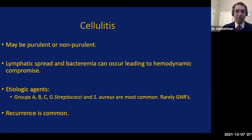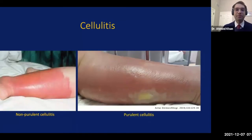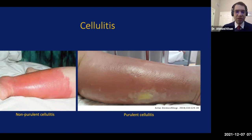Etiologic agents most commonly involve streptococci groups A, B, C, and G, and Staphylococcus aureus, though gram-negative rods are sometimes observed as well. Recurrence is common, especially in people who have lymphedema and stasis. On the left we have non-purulent cellulitis, showing erythema that may be separated by patches of non-inflamed skin, with margins that are not as clearly demarcated as erysipelas — something that can be used to differentiate the two entities. On the right we see purulent cellulitis, showing a cellulitic erythematous area surrounding an area of pus.